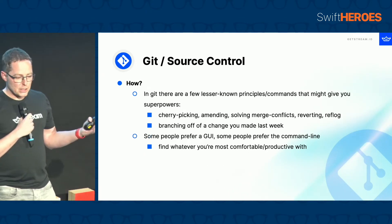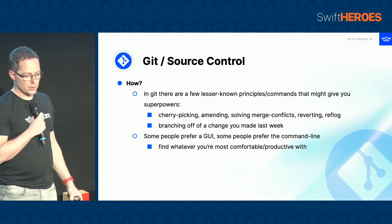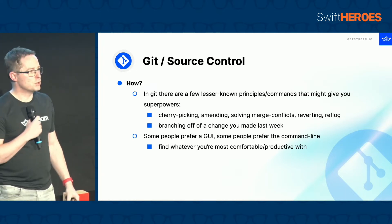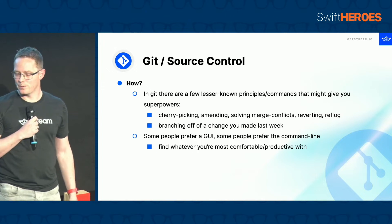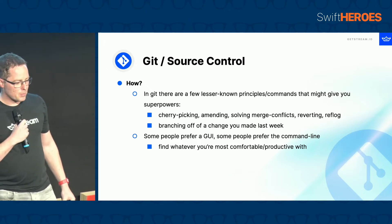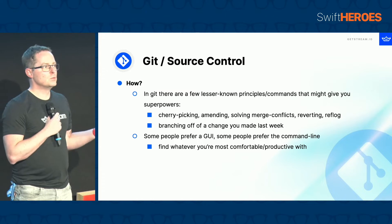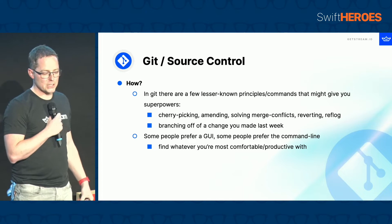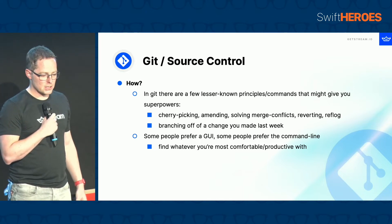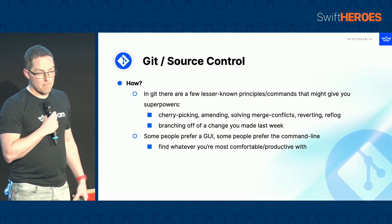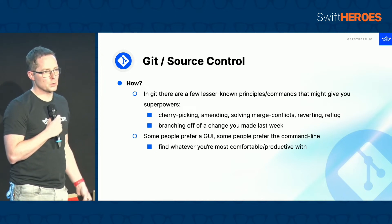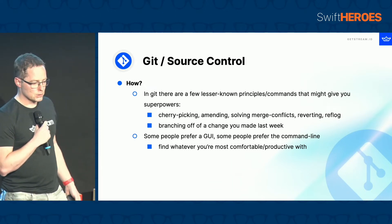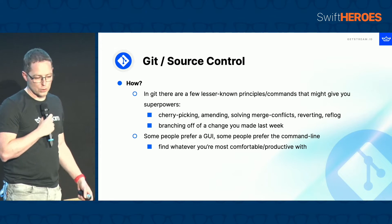How do you do that? Things like cherry picking, amending, solving merge conflicts, reverting — and the ref log is something you should look into. Branching is also something you should be able to do well. People often don't know that you can pick any commit and create a branch out of that point in time. It doesn't matter if you use a user interface or the command line — find whatever works for you and learn about this tool, because it's core to your work.